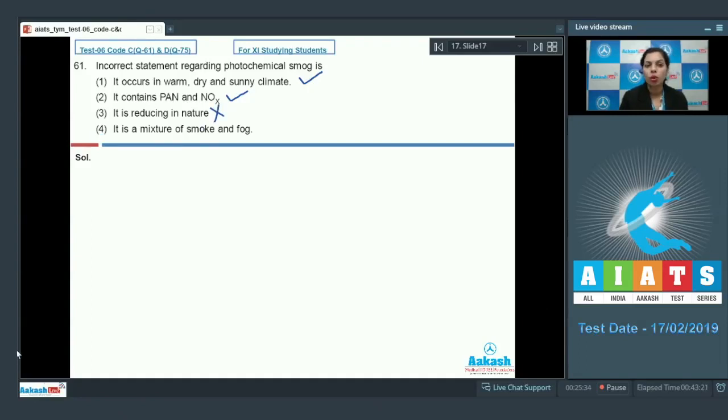Just recall what type of nature this photochemical smog is - it is basically oxidizing in nature, not reducing. That's why it is the wrong statement. Further, it is a mixture of smoke and fog - yes, this is a mixture of smoke and fog, and in the presence of sunlight it becomes photochemical smog. That's why the statement is also correct. So which statement is incorrect? Only statement three is incorrect, and that's why option 3 is the correct option for this question.